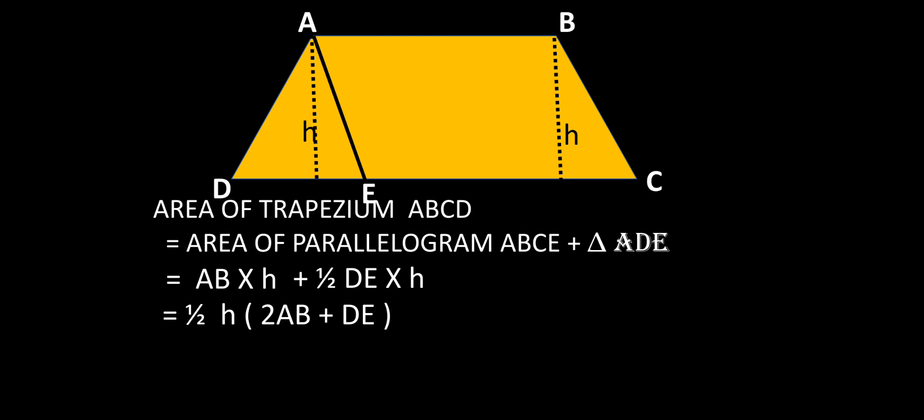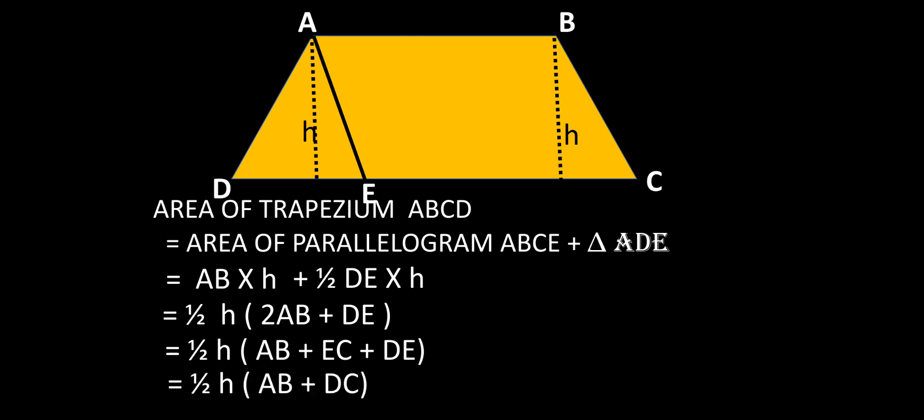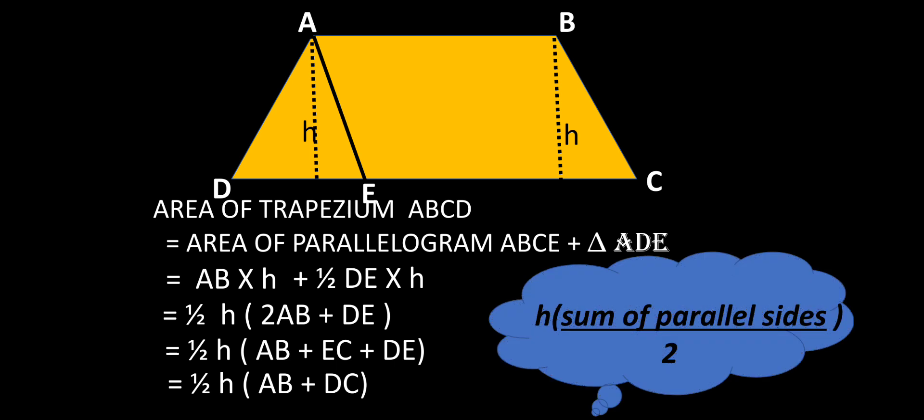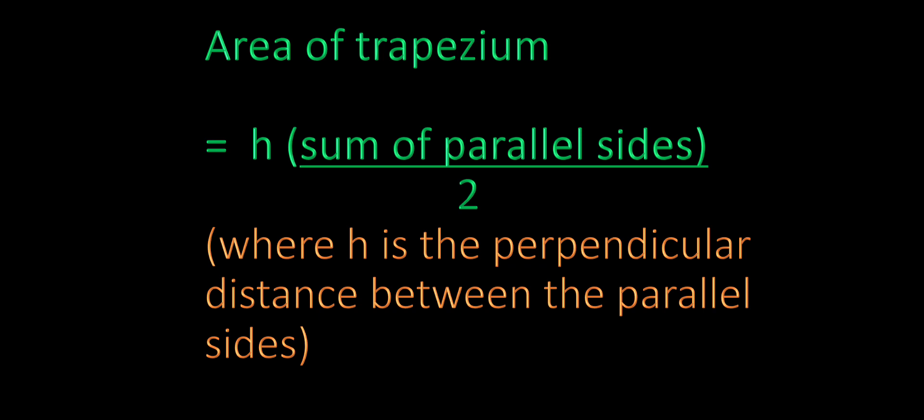The area of triangle ADE equals half DE into H. When we take half H as common, we get 2AB plus DE. We can split 2AB as AB plus EC, and EC plus DE equals CD. So we get half H into AB plus CD, which is the area of the trapezium. The final formula is: area of trapezium equals H into the sum of the parallel sides divided by 2, where H is the perpendicular distance between the parallel sides. Hope everyone understood — thank you, keep watching and keep learning.